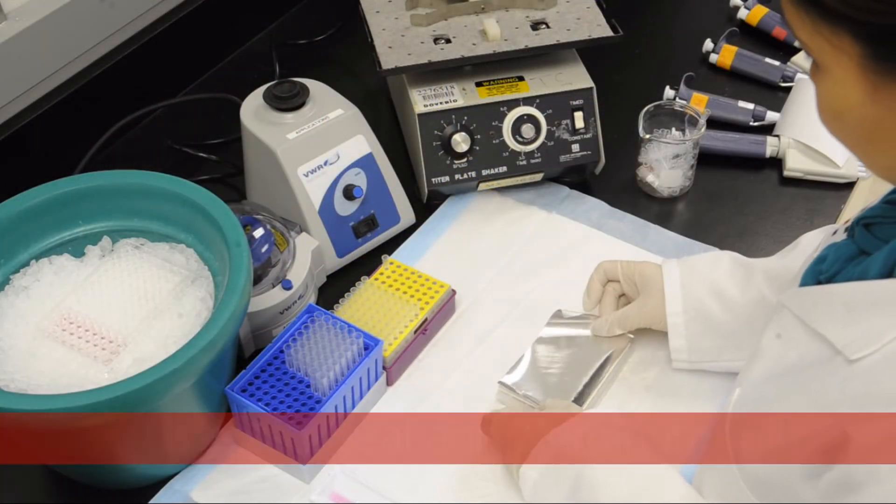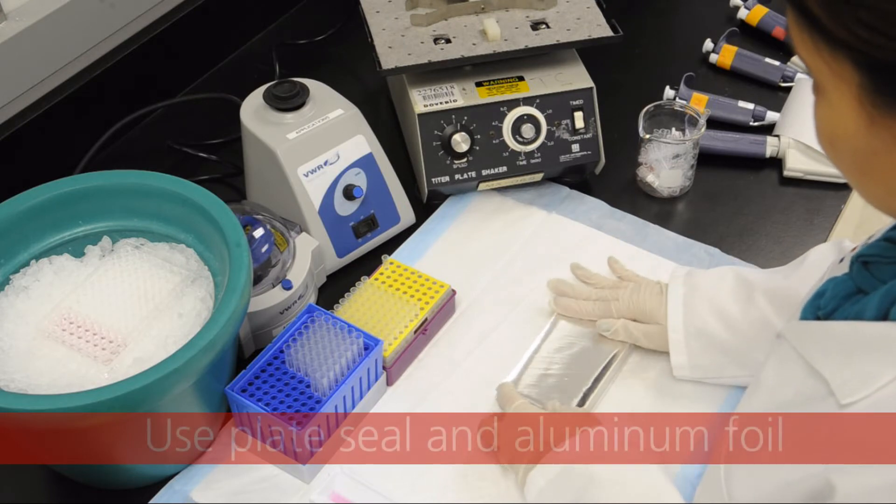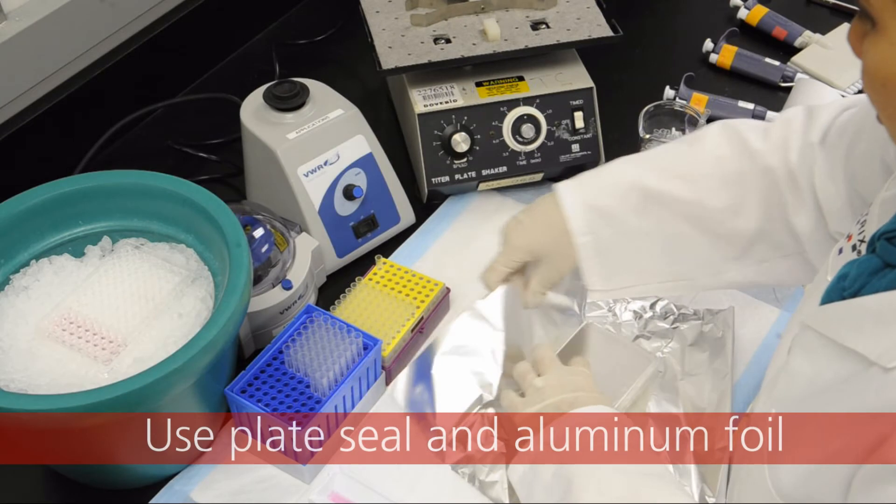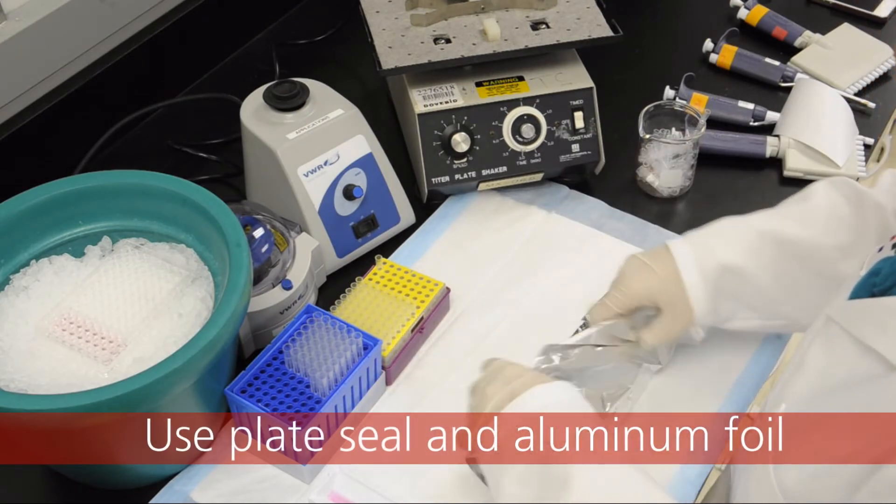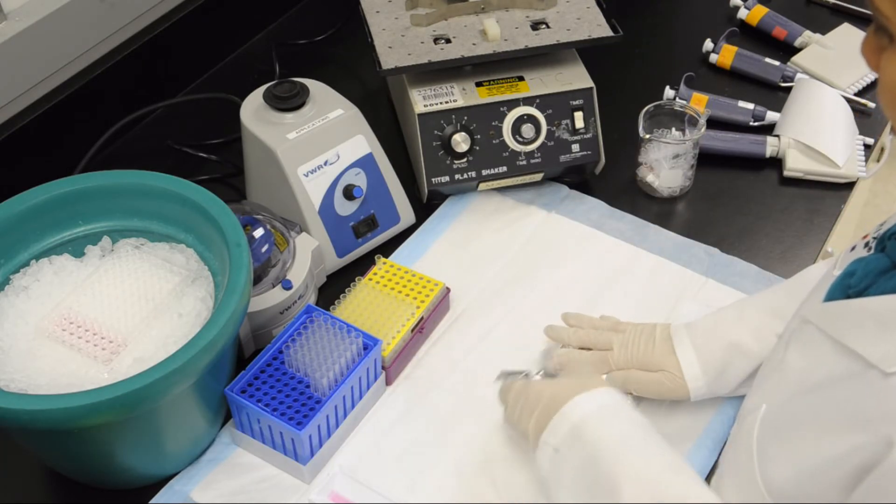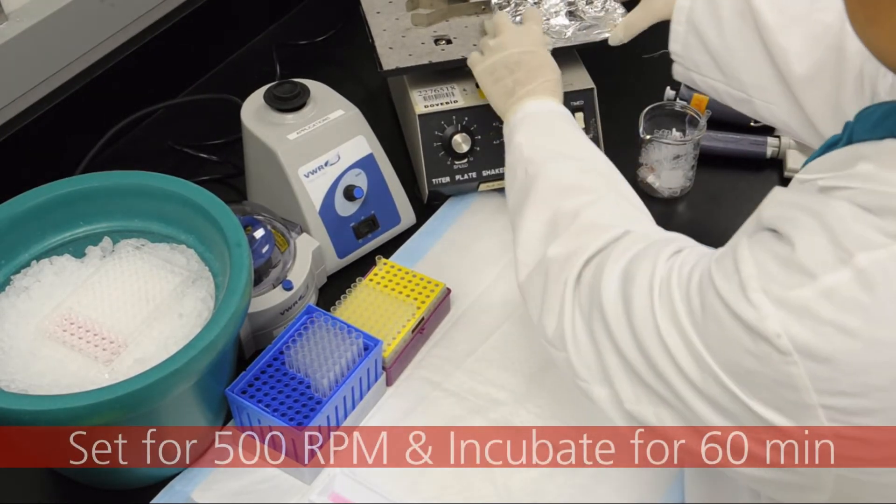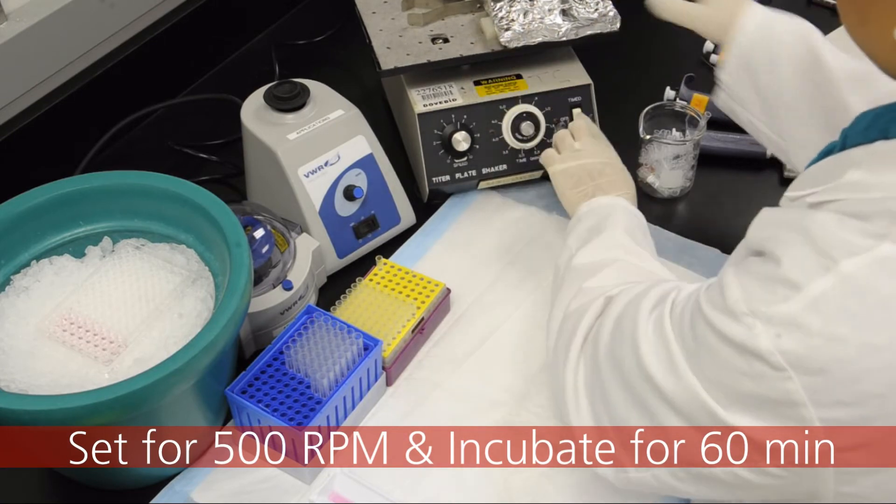Once the samples and standards are loaded, seal the plate with a plate seal. Because the beads are sensitive to light, wrap the plate in aluminum foil. Place the plate on the microtiter plate shaker, set for 500 RPM, and incubate for 60 minutes.